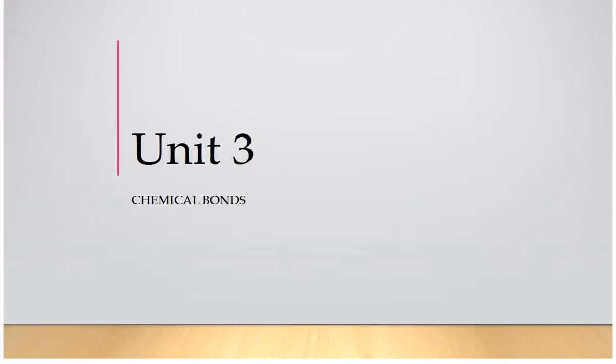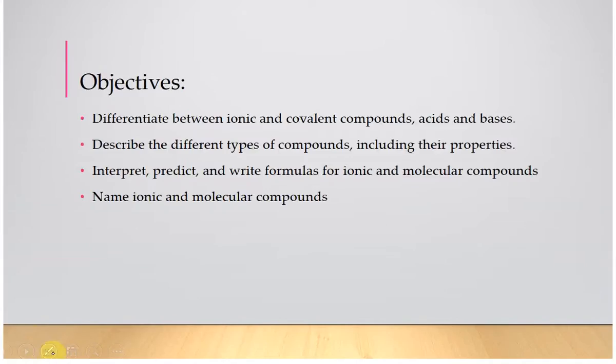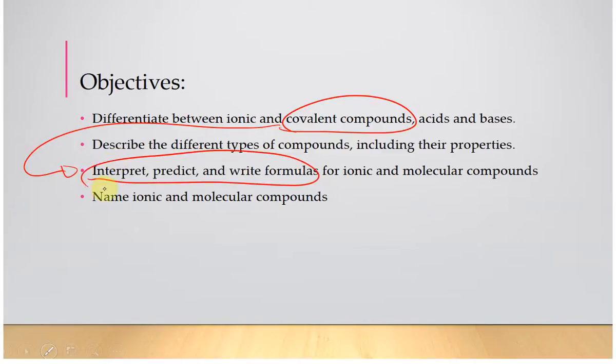Hi everyone. This is the next video in the module for chemical bonds. Here we're going to be focusing on covalent compounds. Now covalent compounds are going to be the ones that have two or more non-metals that are bonded together, sharing electrons. We're going to be looking at writing the molecular formula or naming them.